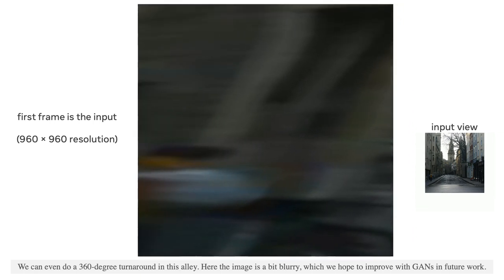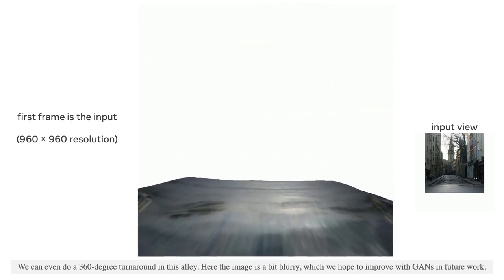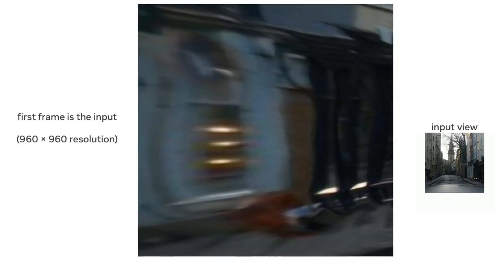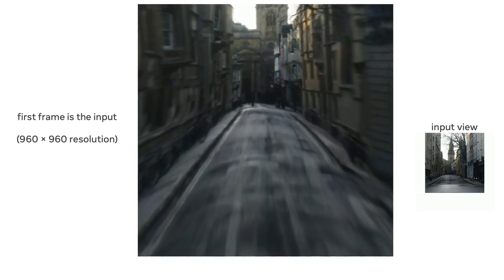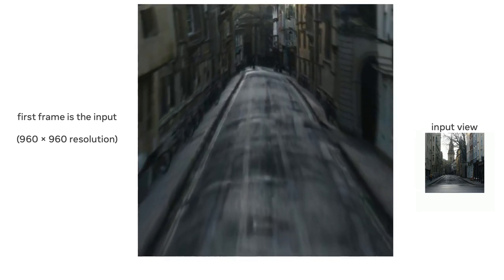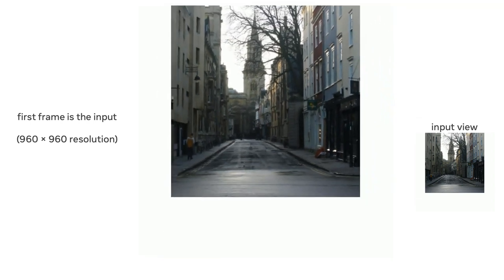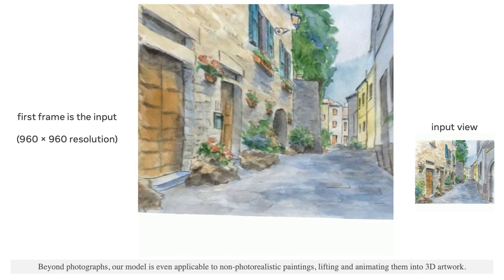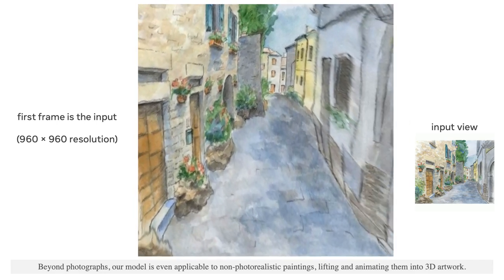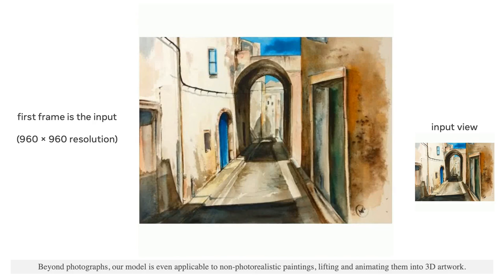Here the image is a bit blurry, which we hope to improve with GANs in future work. Beyond photographs, our model is even applicable to non-photorealistic paintings, lifting and animating them into 3D artwork.